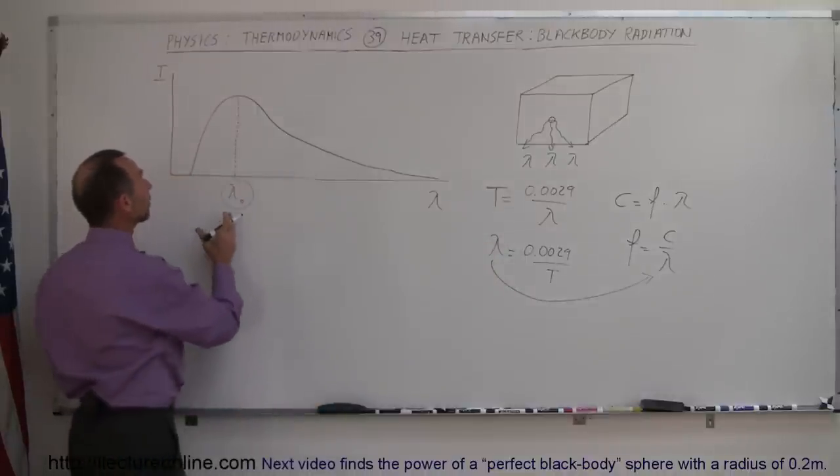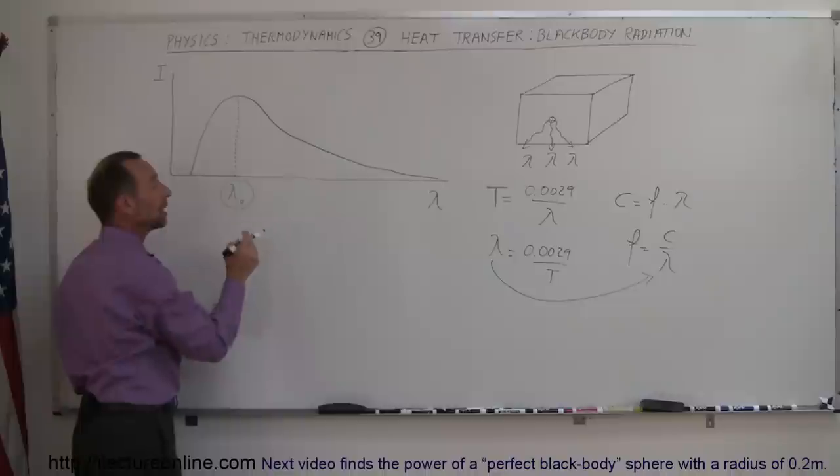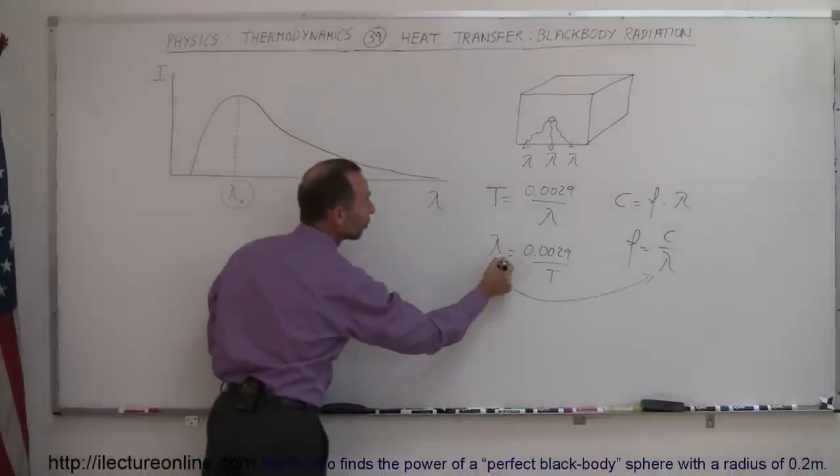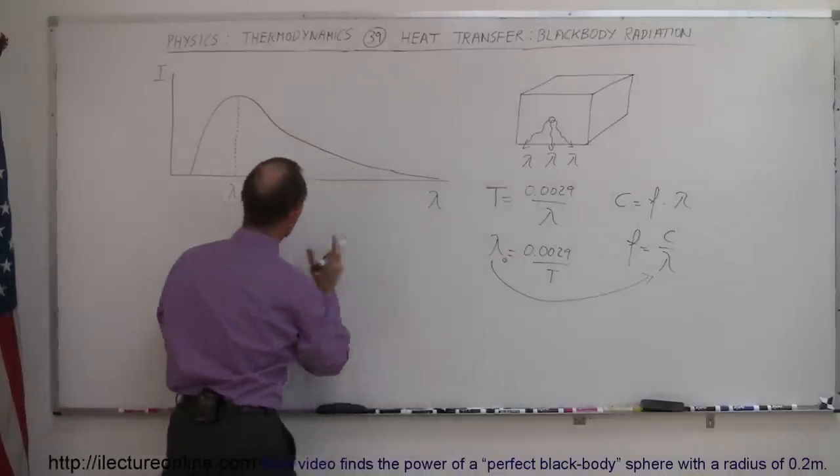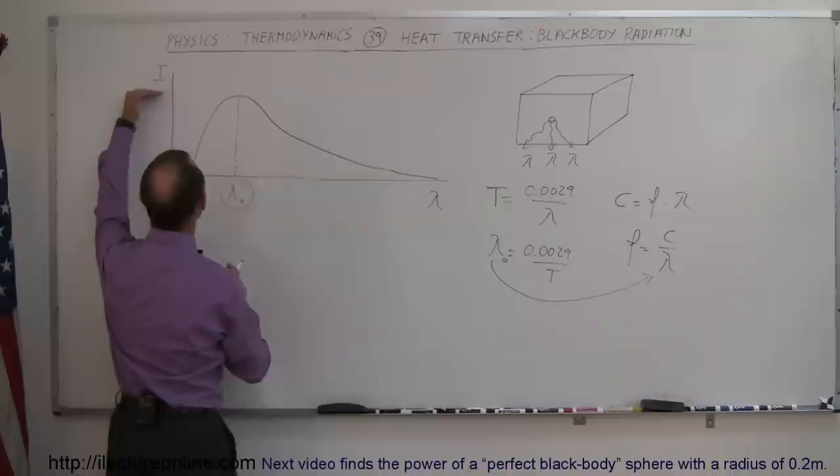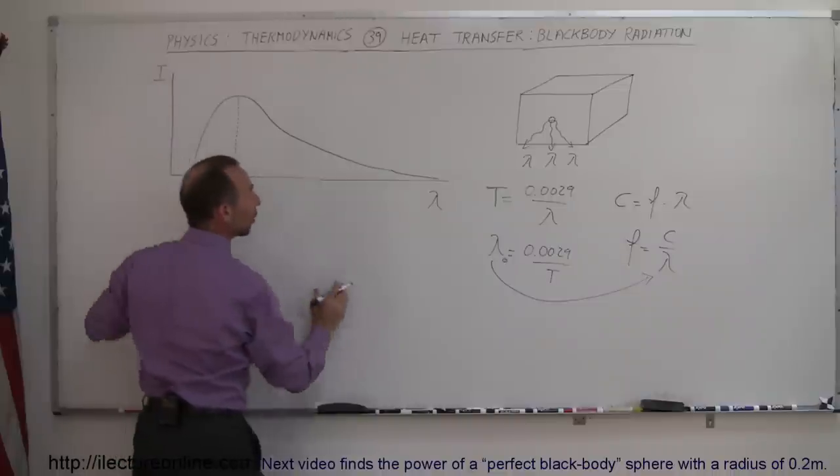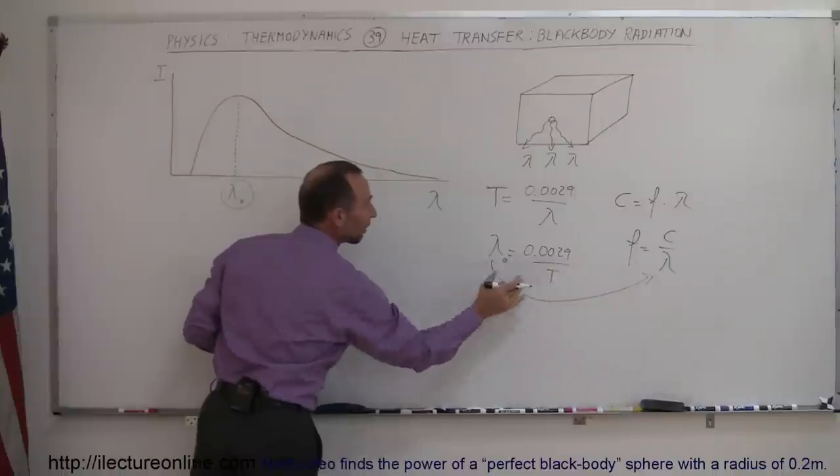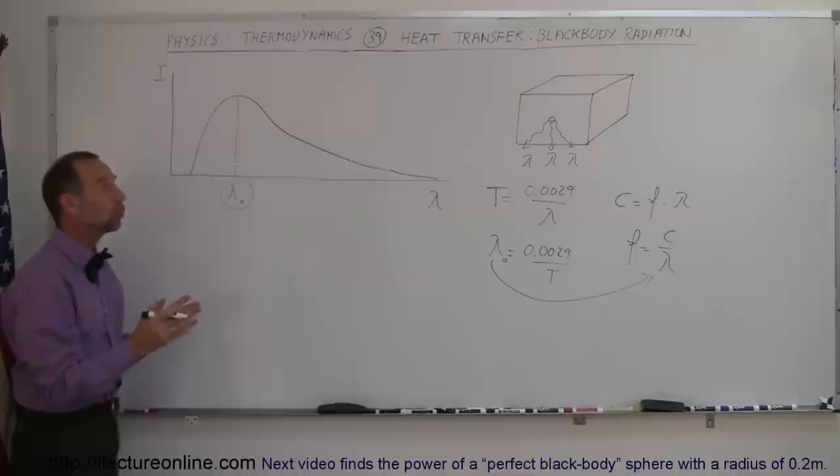However, the most predominant wavelength of the radiation does correspond to the temperature. So we can say that this wavelength right here, that gives us the greatest amount of radiation coming from the box, will definitely depend upon the particular temperature of the box. But you do get radiations of other types as well.